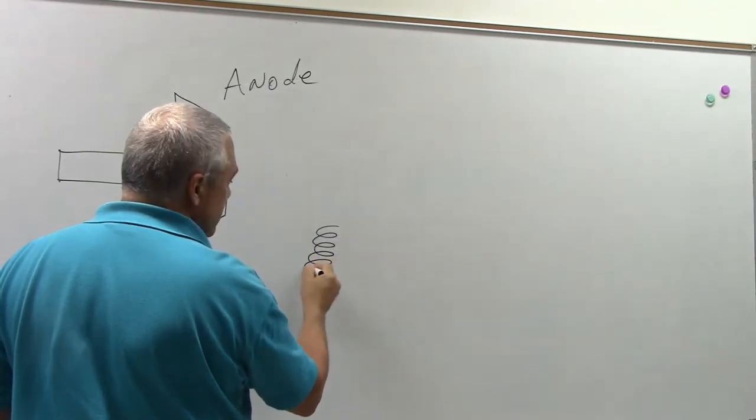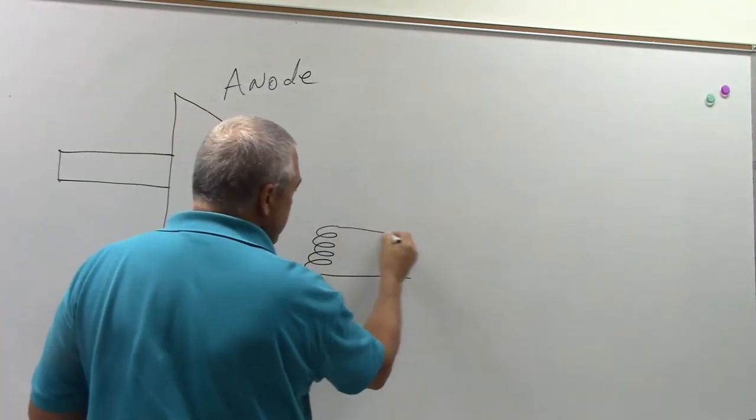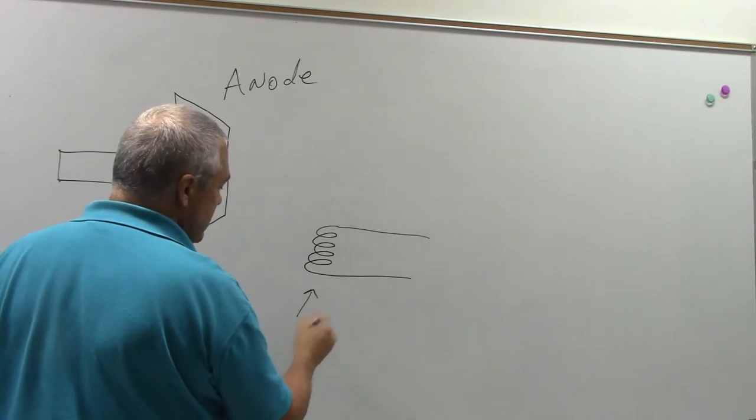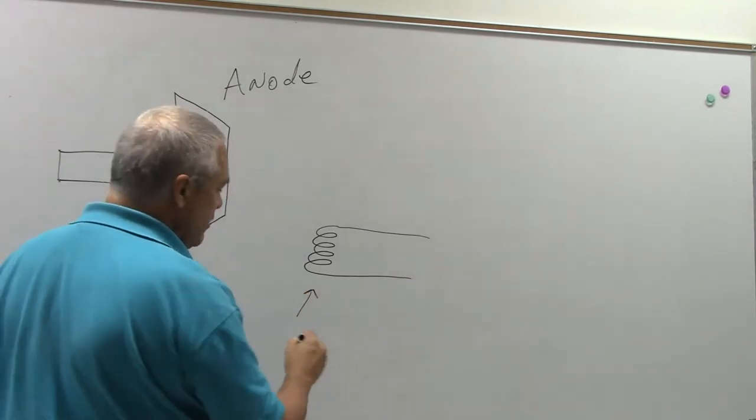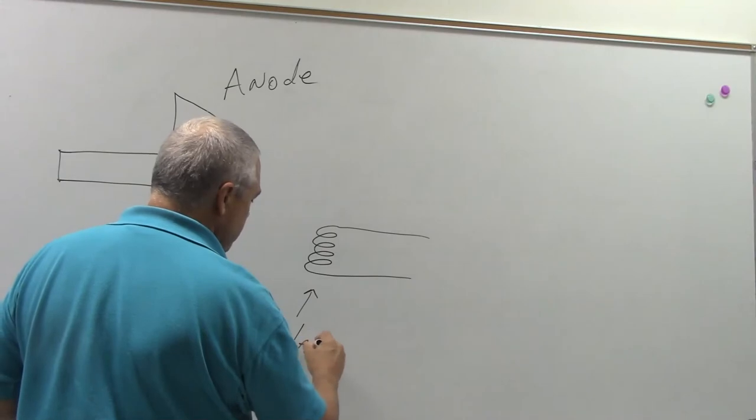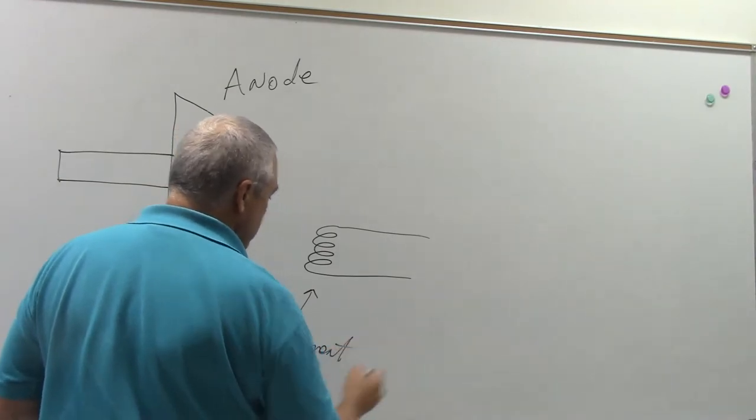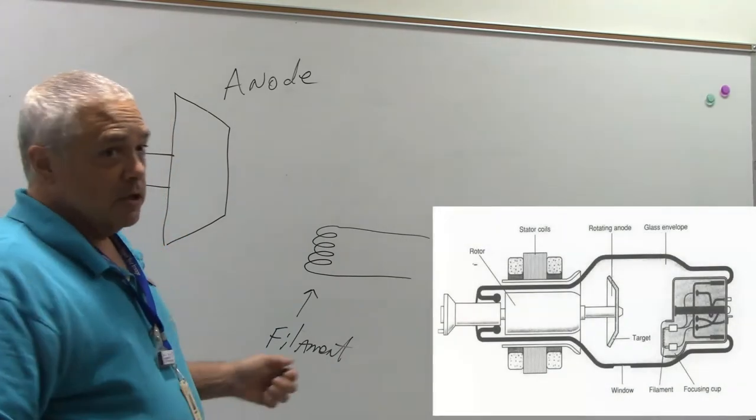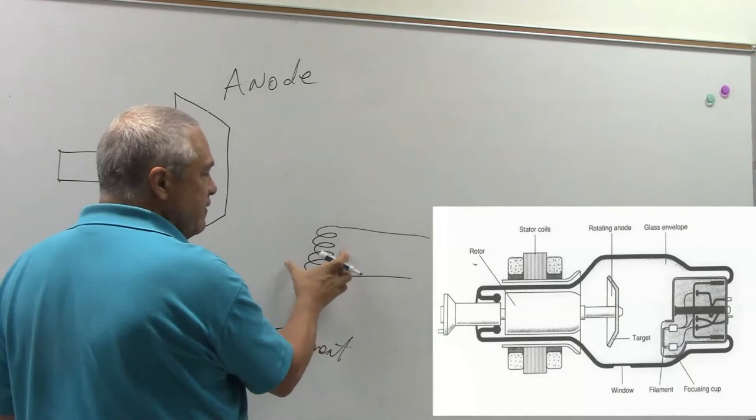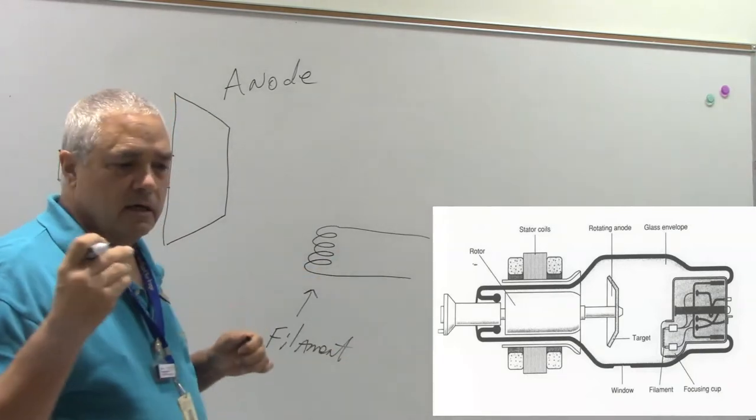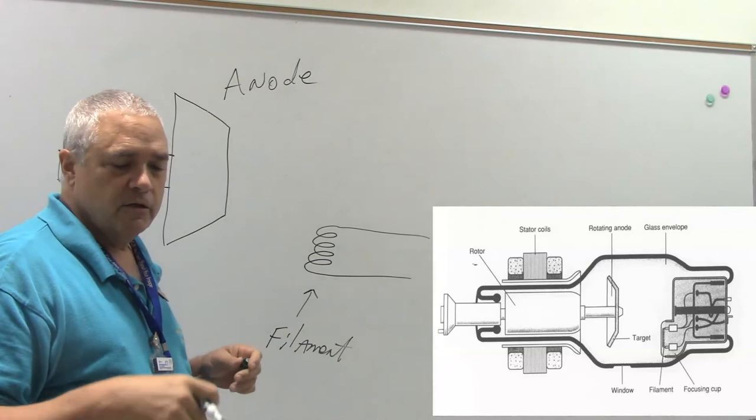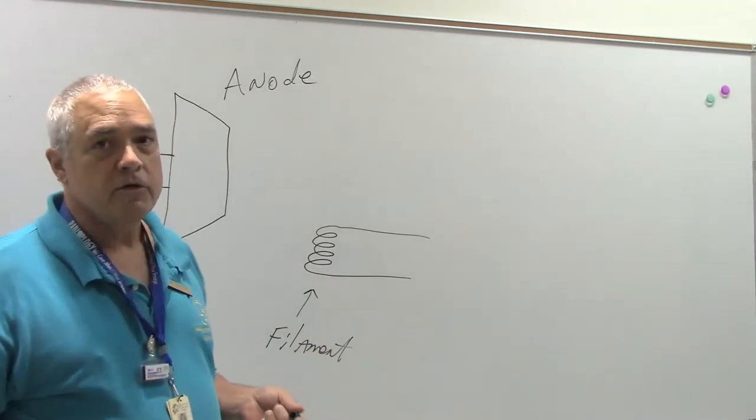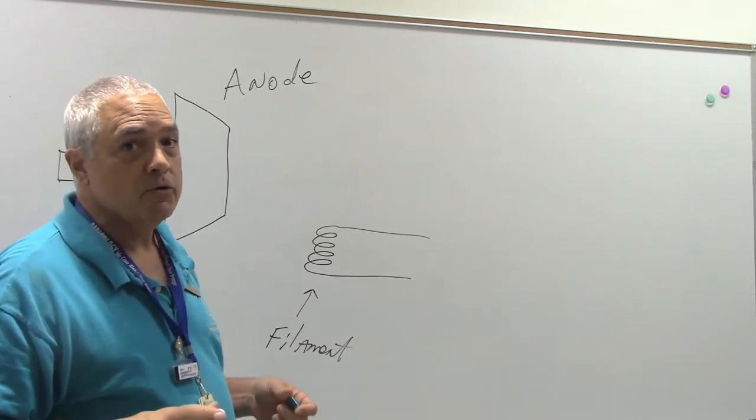I've got the anode. And then over here, I'm going to draw my little curly... This is basically like a lightbulb filament. And what this is, this is part of the cathode. My filament. Okay, now, in general terms, what I've got in my filament circuit, I've got a current that comes into the building. It's 220 volts. What I'm going to do is I'm going to run that current through a step-down transformer.